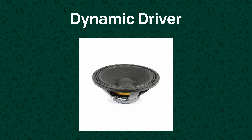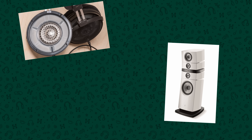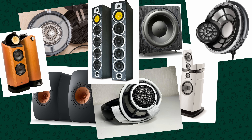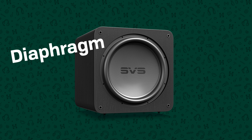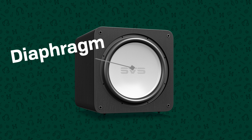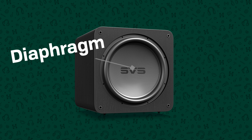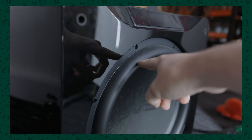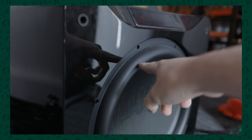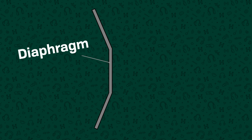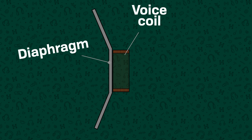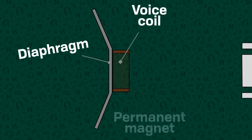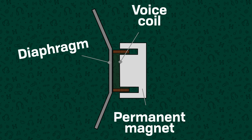Let's start with the most common type of driver, the dynamic driver. This is what you'll see in the vast majority of speakers and headphones. The part that actually pushes and moves air is called the diaphragm which usually looks like a rigid cone or dome. Around this you'll find some form of flexible surround which allows the diaphragm to move back and forth. Attached to the diaphragm on the rear is a coil of wire called the voice coil and this voice coil sits inside or around a permanent magnet.